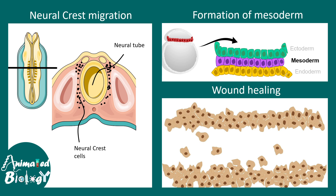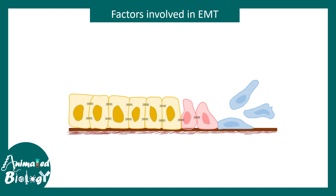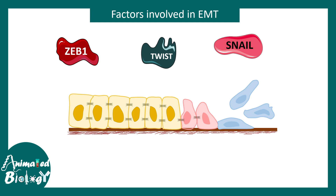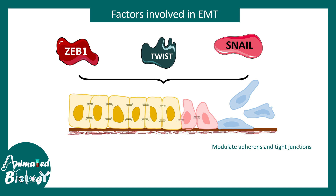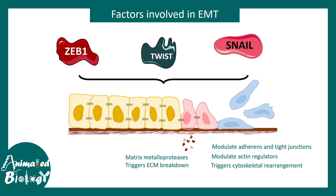The factors involved in EMT include transcription factors like ZEB1, Twist, and Snail, which are highly involved in epithelial to mesenchymal transition. Experiments have shown that ectopic expression of these transcription factors in epithelial cells causes transformation into mesenchyme. In cancer cells, these transcription factors are often upregulated or mutated. They modulate adherence junction and tight junction integrity, modulate actin regulators allowing changes in cell shape, and trigger cytoskeletal rearrangement. Another important factor is matrix metalloproteinases, which can dissolve the extracellular matrix, making cell detachment easier.